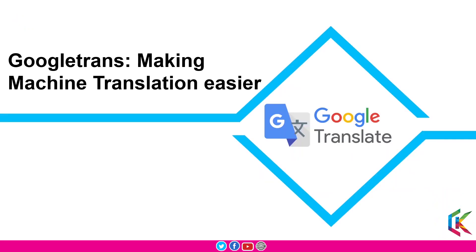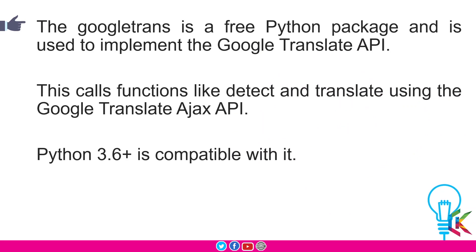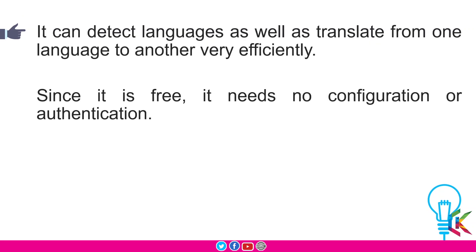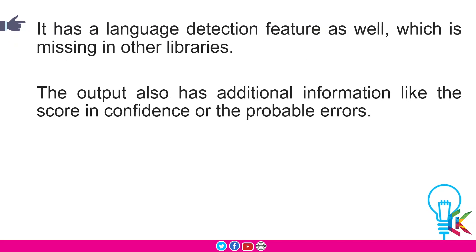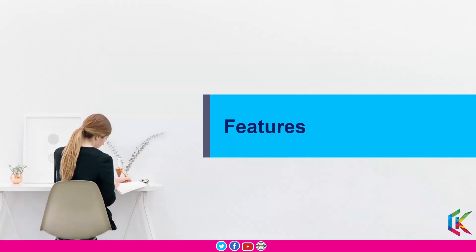To solve these problems we are going to use the Google Translator library to make machine translation easier. Google Translator library is a free Python package used to implement the Google Translate API. It calls functions like detect and translate using the Google Translate Ajax API. Python 3.6 plus is compatible with it. It can detect languages as well as translate from one language to another very efficiently. Since it is free, it needs no configuration or authentication. It has a language detection feature which is missing in other libraries. The output also has additional information like the score and confidence over probable errors.